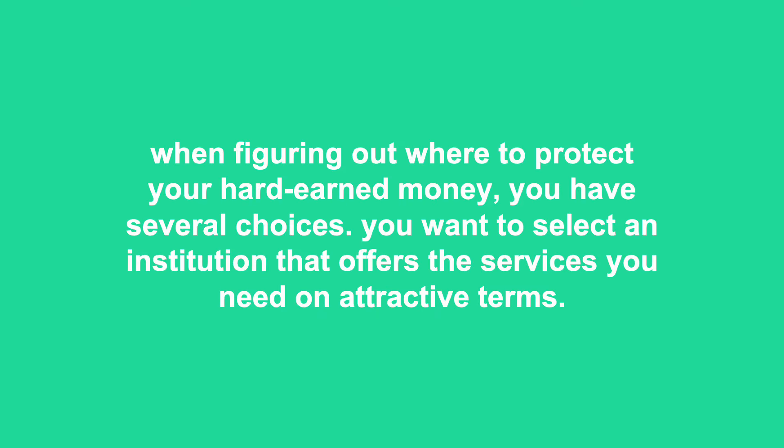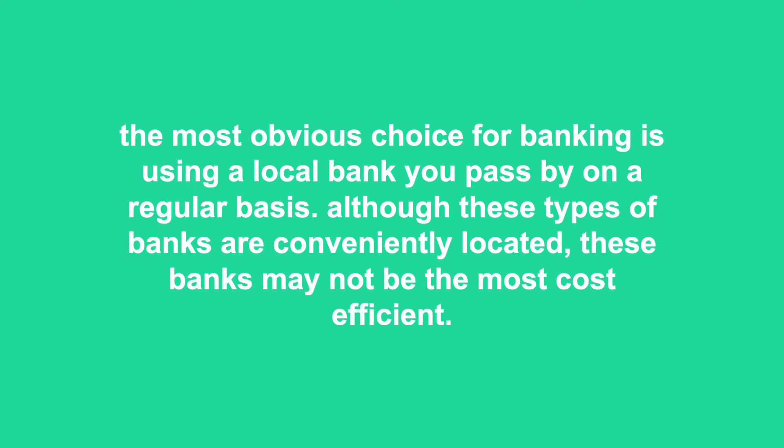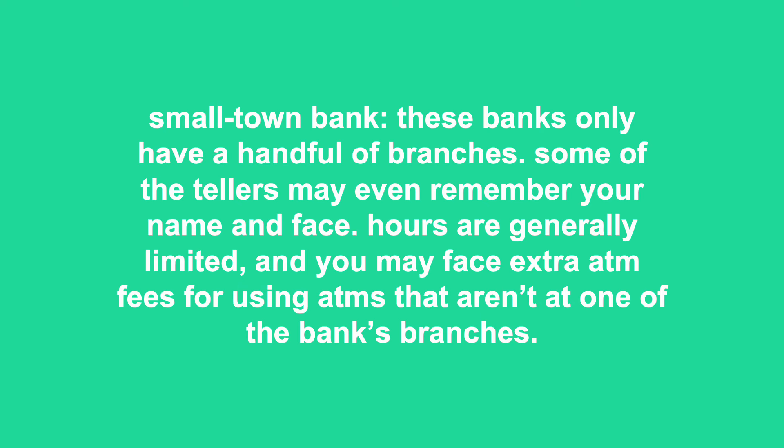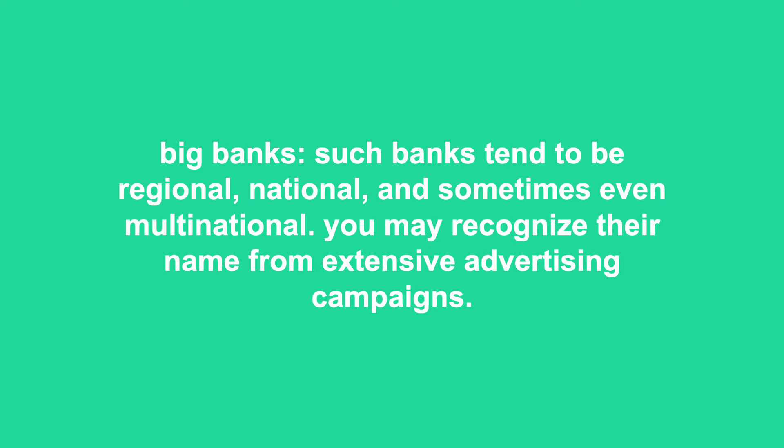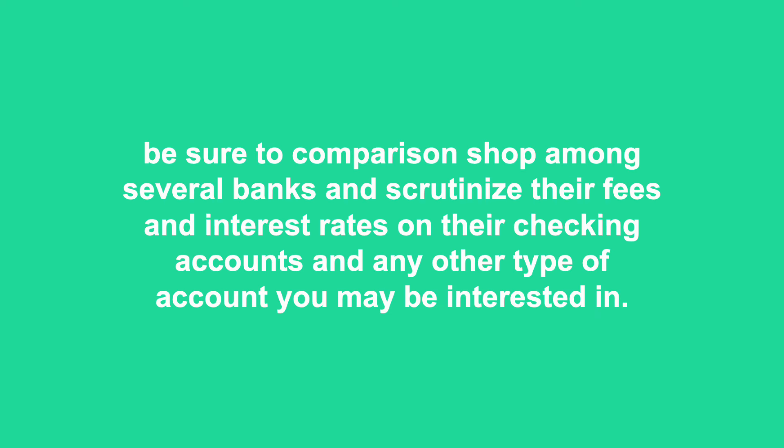When figuring out where you want to protect your hard-earned money, you have several choices. You want to select an institution that offers the services you need on attractive terms. The most obvious choice is using a local bank you pass by on a regular basis, although these banks may not be the most cost-efficient. You can find two main types of brick-and-mortar banks: small-town banks, which only have a handful of branches — hours are generally limited and you may face extra ATM fees; and big banks, which tend to be regional, national, or multinational with extensive ATM networks, but you pay for it through less competitive terms on checking and savings accounts. Be sure to comparison shop among several banks and scrutinize their fees and interest rates.